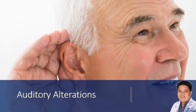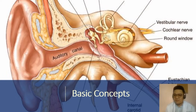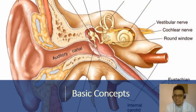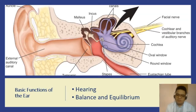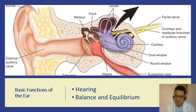Hello, we'll be discussing auditory alterations — problems with our ear. To start, let's talk about anatomy and physiology. When discussing basic concepts of the ear, remember that the ear is divided into three parts: the outer ear, the middle ear, and the inner ear. Our ear has two basic functions: hearing, and balance and equilibrium.